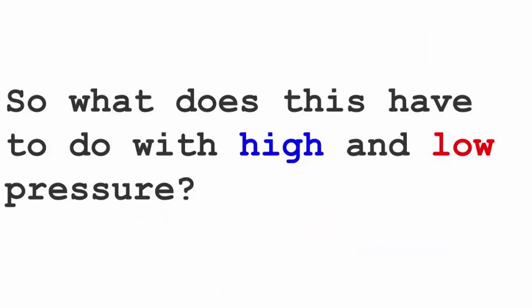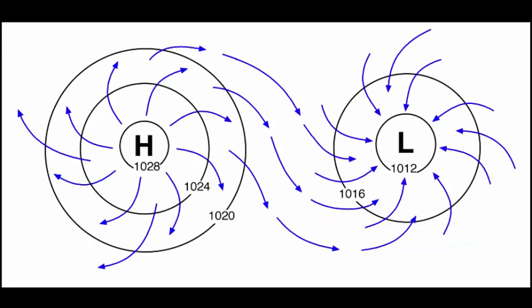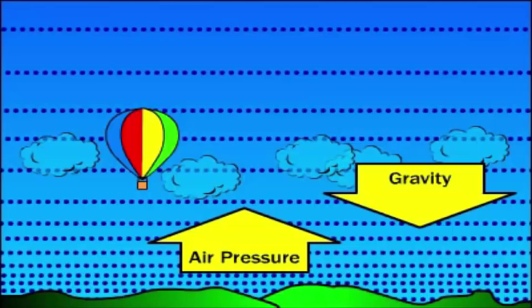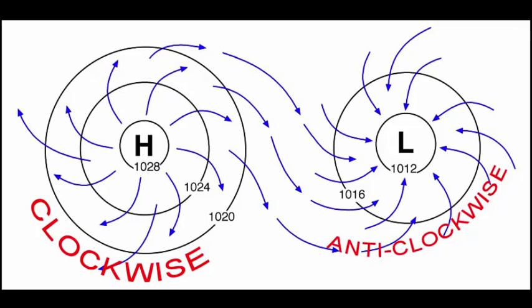So what does this have to do with high and low pressure? High pressure is associated with sinking air and low pressure is associated with rising air. Generally, it makes sense that air flows from high pressure to low pressure, and the reason is due to gravity. Due to Earth's gravitational force, airflow is directed inward toward the low pressure center and outward away from the high pressure center. Therefore, wind in a high pressure system flows in a clockwise direction out of the center, while in a low pressure system, wind flows in an anti-clockwise direction towards the center.